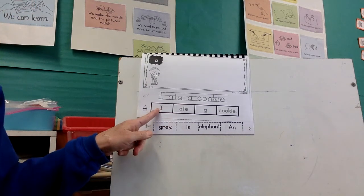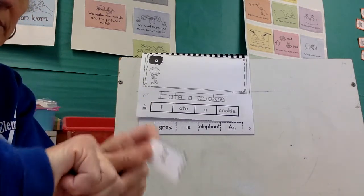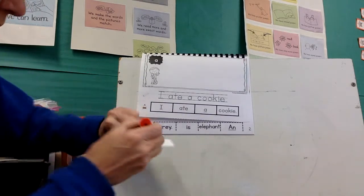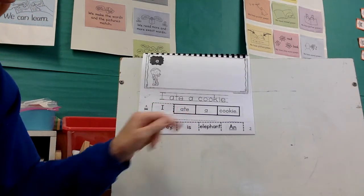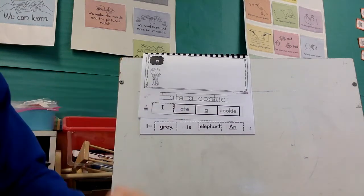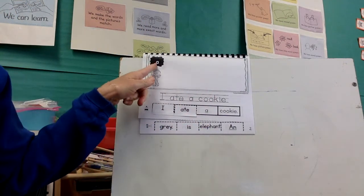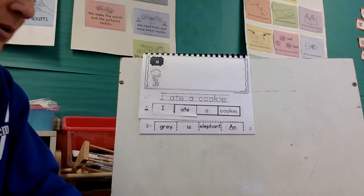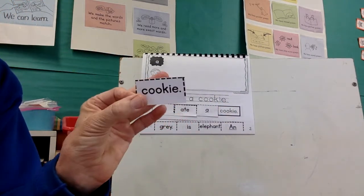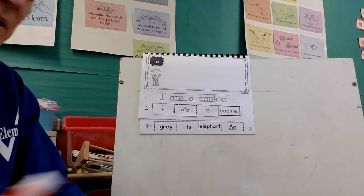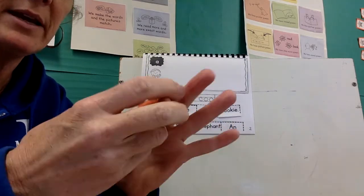The first word I'm looking for is I. That's not it. There it is. I'll take my glue. I put a little bit of glue on the back. And I put it right on top. I. Let me find the word ate. Got it. Put a little glue on the back. Glue it on. A. That's our word for today. A. There it is. Put a little glue on the back. And then cookie. There it is. Cookie. That's all the gluing I'll do. So I make sure that I put the cap back on my glue stick. Otherwise it will dry out and it will be no good anymore.